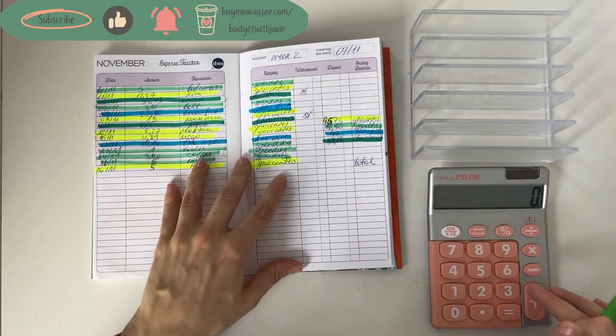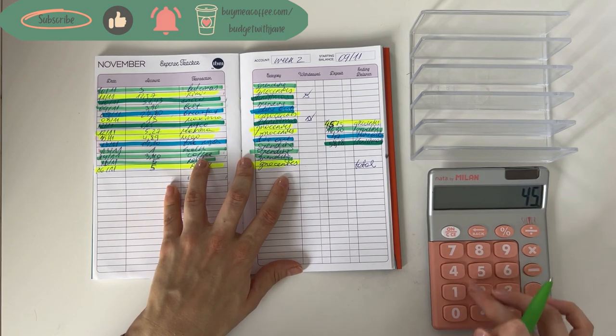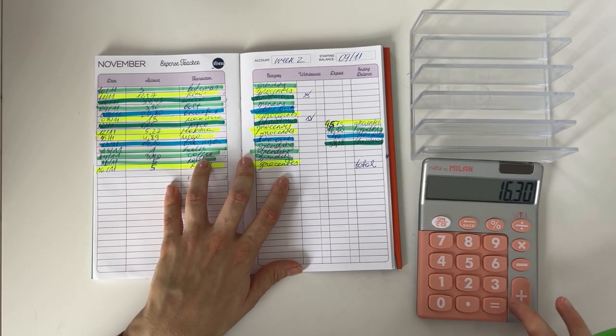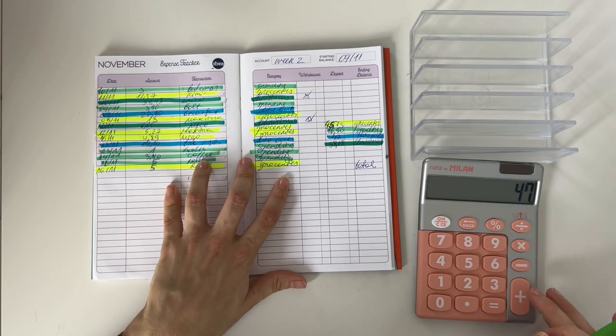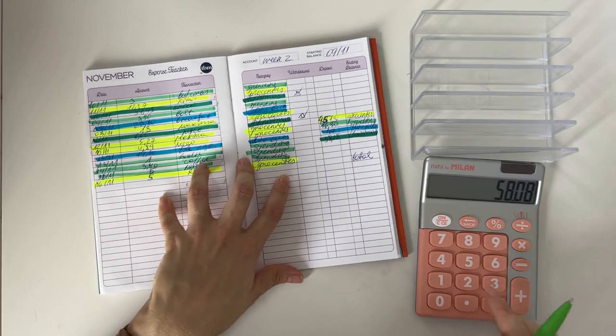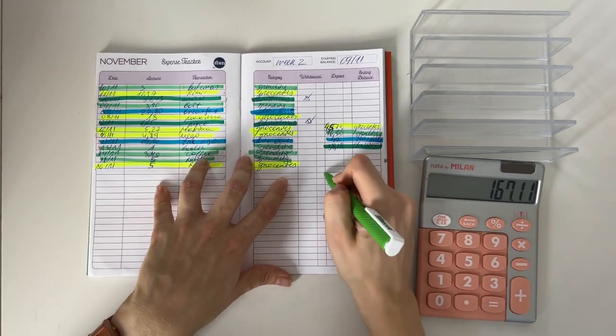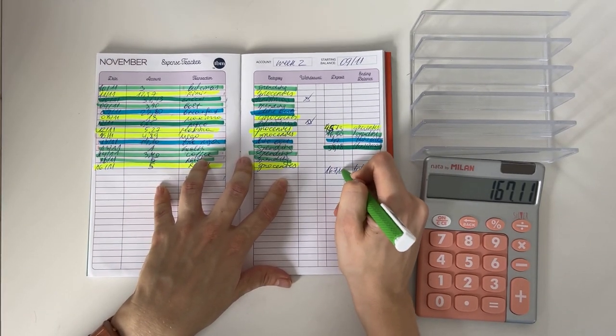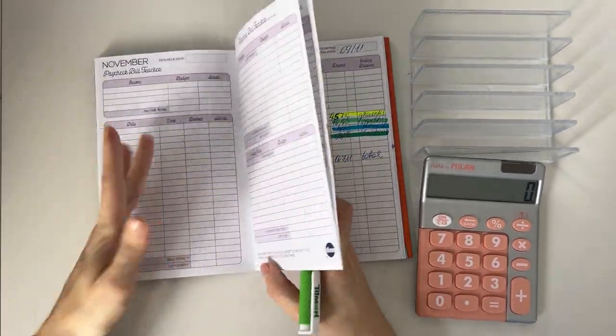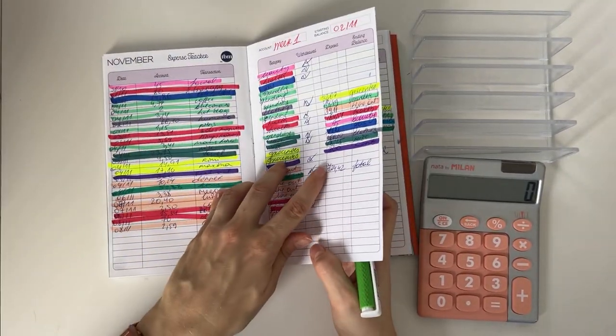We had 45.73 going in groceries, 16.30 in spending, 47 in dine out, and 58.08 in Christmas - I bought a present for my sister. So in total, 167 euros and 11 cents for the second week. A lower week, which is always nice because I think the previous week was over 700 euros. That's a big difference.